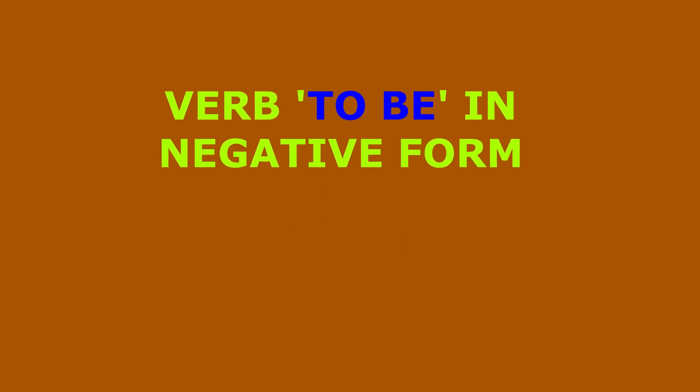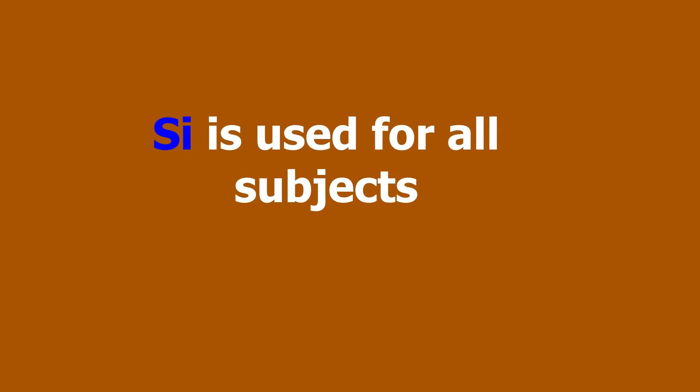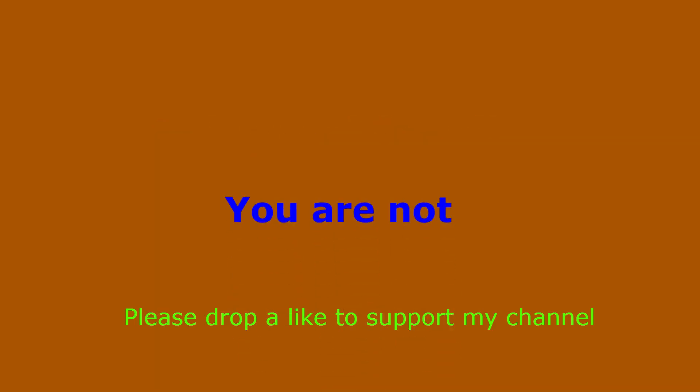The negative present tense of the verb 'to be' is 'si', and it's used for all subjects. There are no other forms of 'si' that exist. 'Si' can therefore mean I am not, you are not, he or she is not, we are not, and so forth.